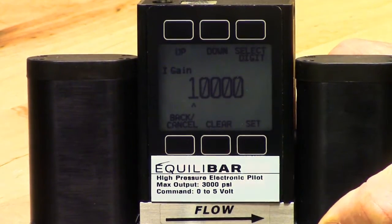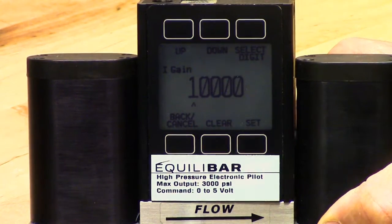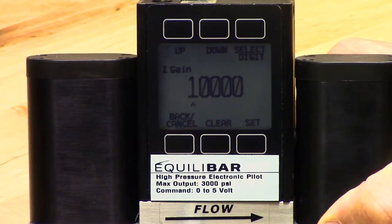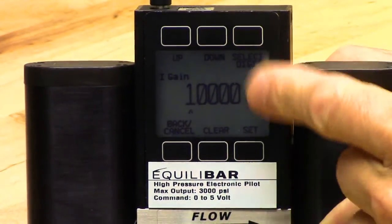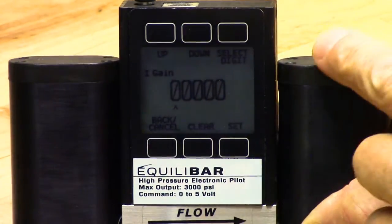Same procedure. Press the button above integral. It's currently set at the factory default of 10,000. If you wish to change that, we would simply select the digit, the 10,000s. We'll go down, set it to zero.